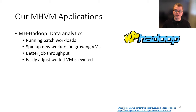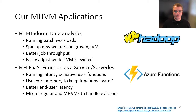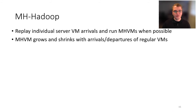The first MHVM application we modified is Hadoop, which we call MHHadoop, performing data analytics as a batch workload. As VMs are allocated more memory, Hadoop can spin up additional workers, directly improving job throughput. As memory is reclaimed or a VM gets evicted, it scales down and redistributes work. The second application is Azure Functions, which we call MHFAS — a function-as-a-service application running latency-sensitive user functions. It uses extra memory to keep functions warm, improving end-user latency, and uses a mix of regular and MHVMs to run eviction-safe functions on MHVMs.